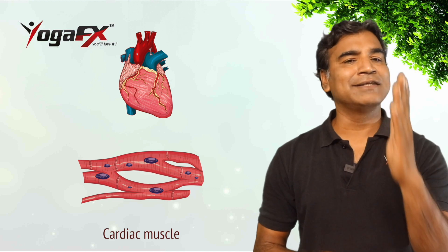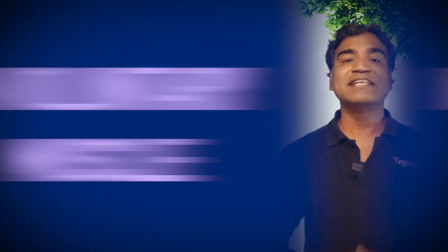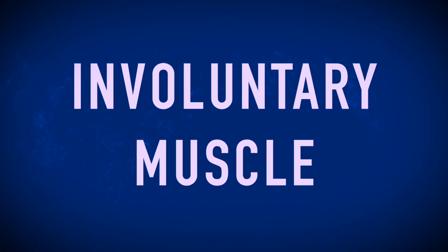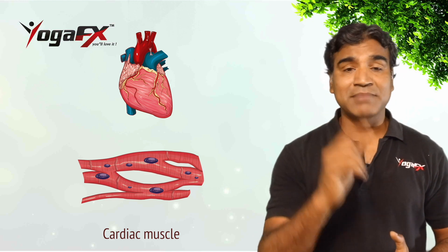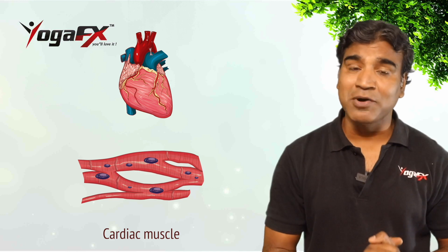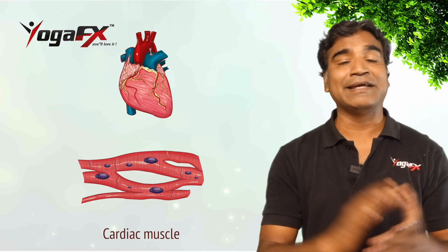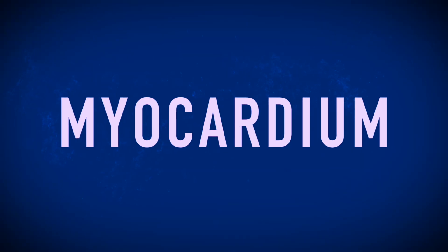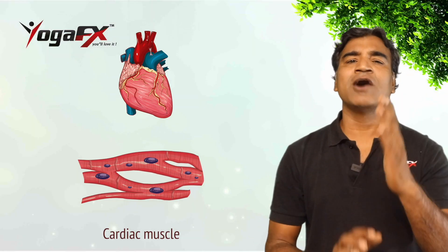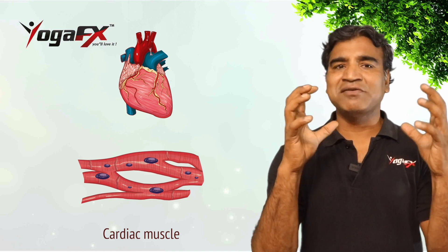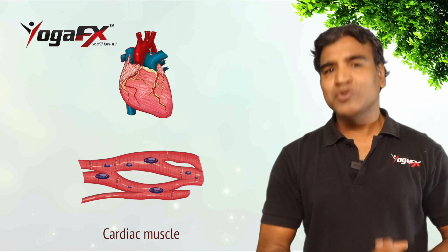Now let us talk about cardiac muscles. Cardiac muscle, also known as heart muscle or myocardium, is involuntary striated muscle that constitutes the main tissue of the wall of the heart. Cardiac muscle contracts in response to signals from the cardiac conduction system. The heart wall is composed of three layers. The middle layer, the myocardium, is responsible for the heart's pumping action. Cardiac muscle, found only in the myocardium, contracts in response to signals from the cardiac conduction system to make the heart beat.